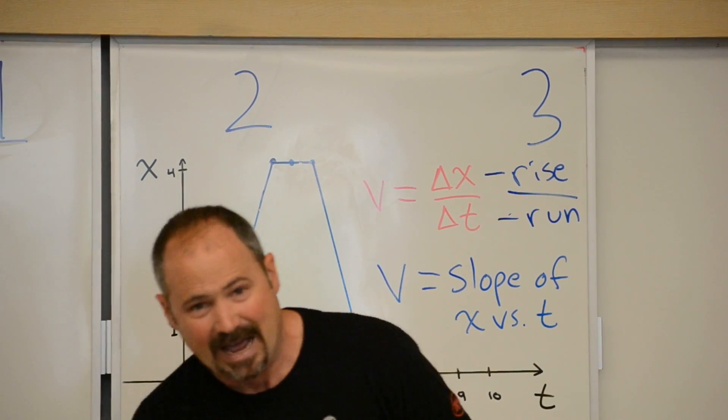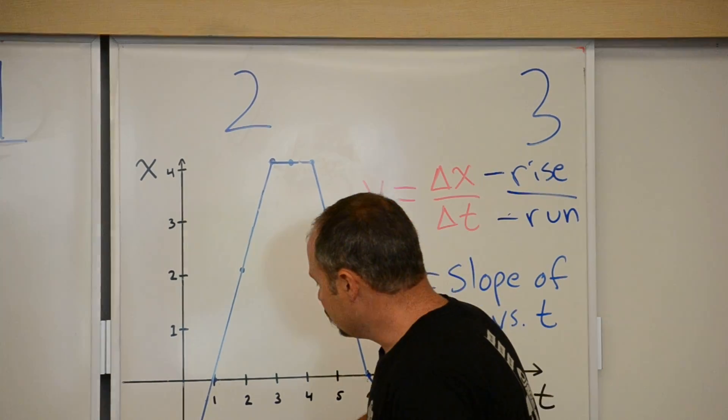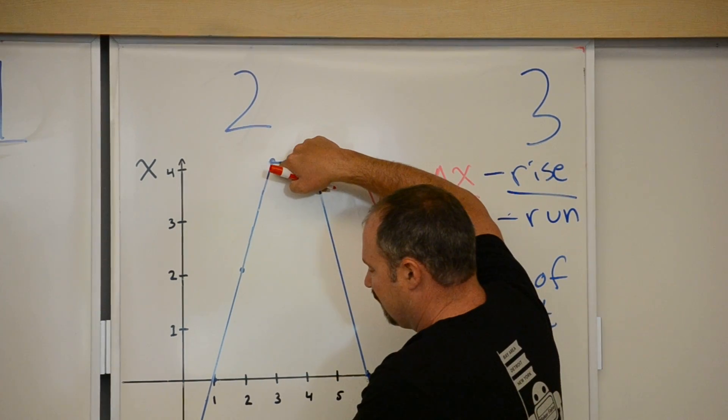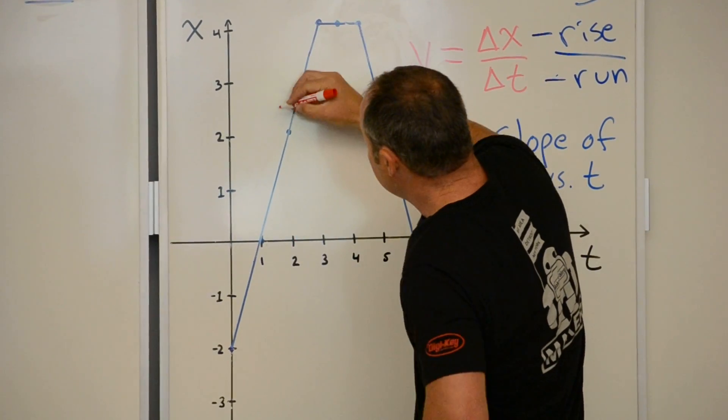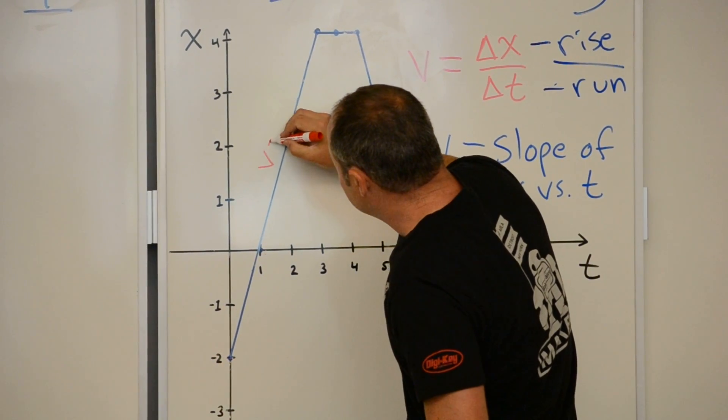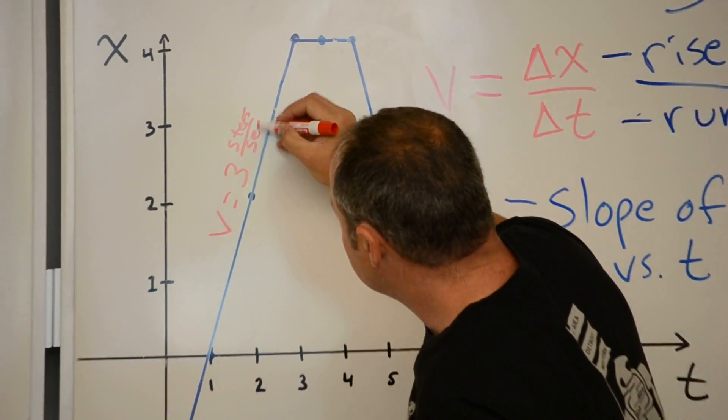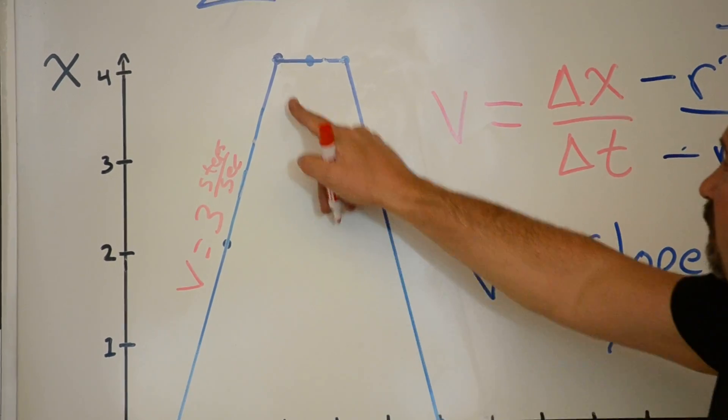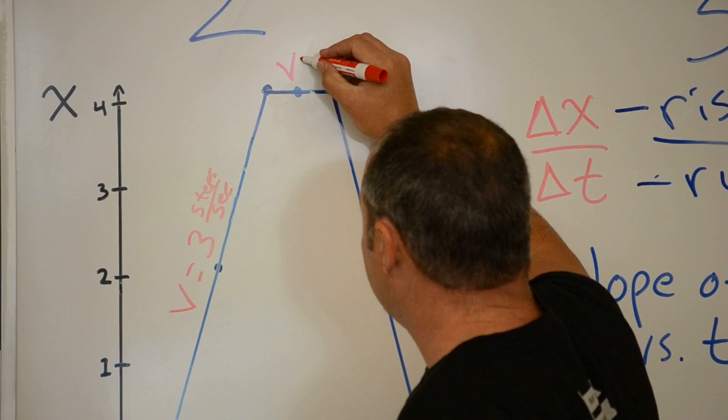And we can go ahead now and calculate my velocities. In this first section, the rise is 6. The run is 3. So, I know my velocity is 3 steps per second. Here, there is no rise. My position is not changing. Clearly, my velocity is 0.